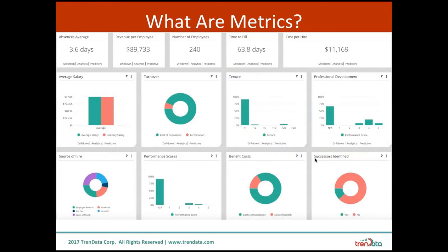Metrics can be represented a number of ways. Some are very unidimensional, really having only one factor involved, such as absences from a company, the number of employees, or the amount of days it takes to fill a position, and thus can be represented very easily with just a number.